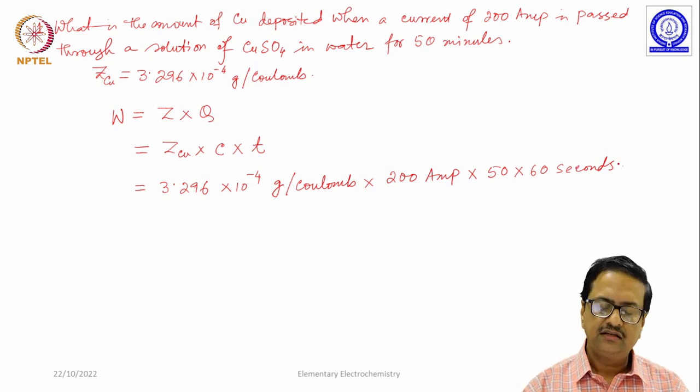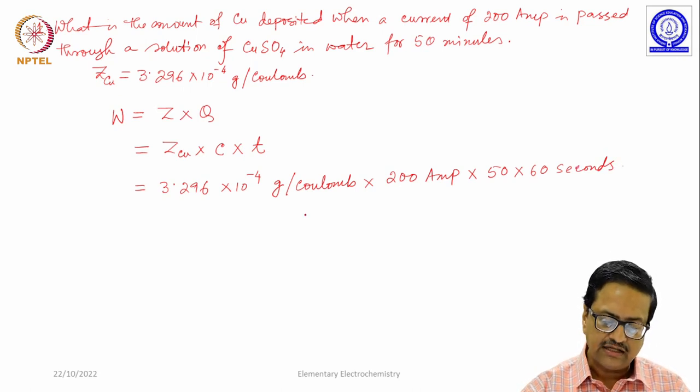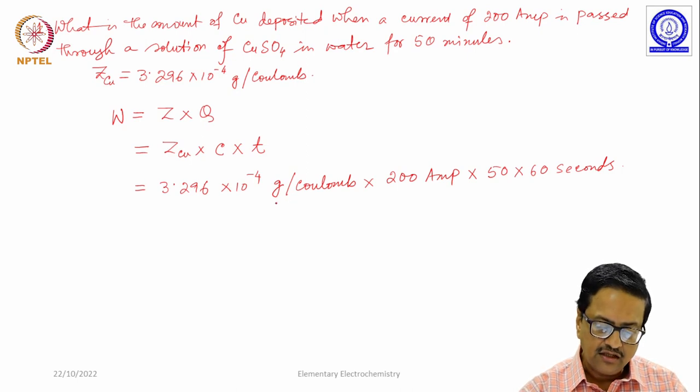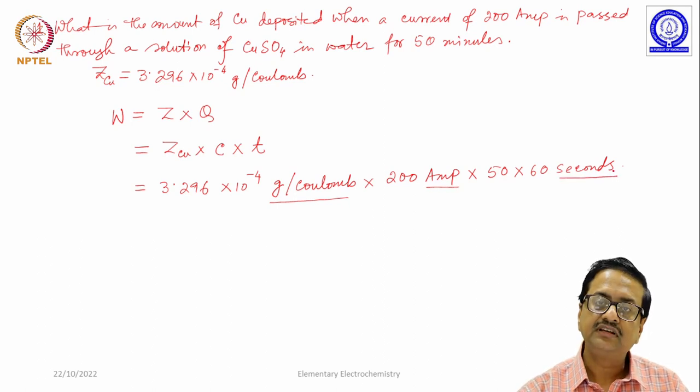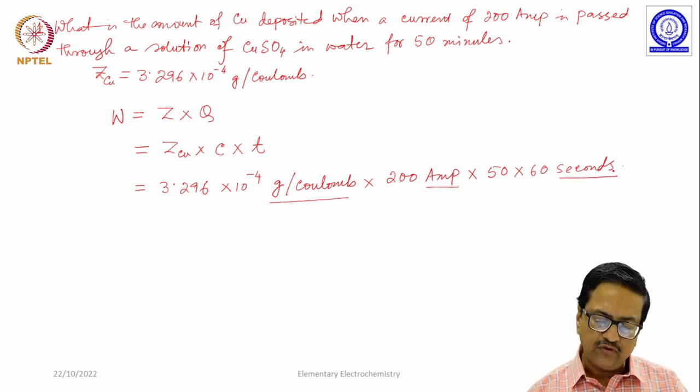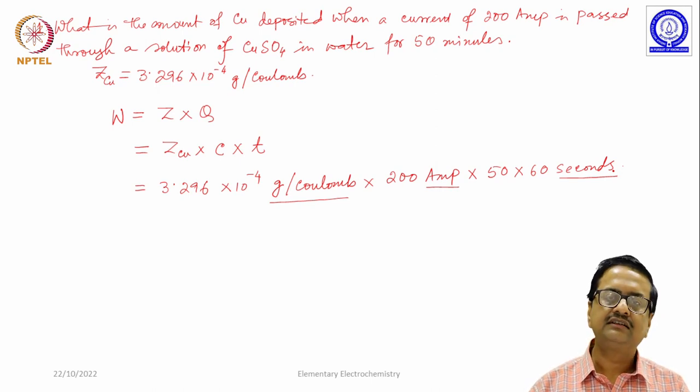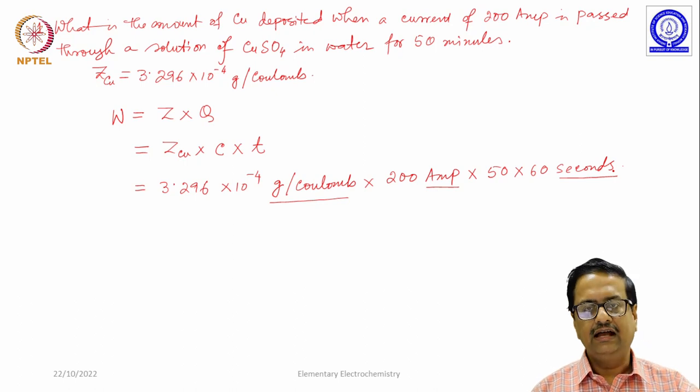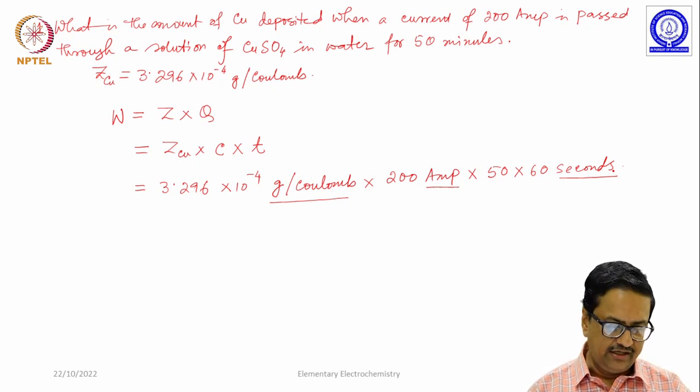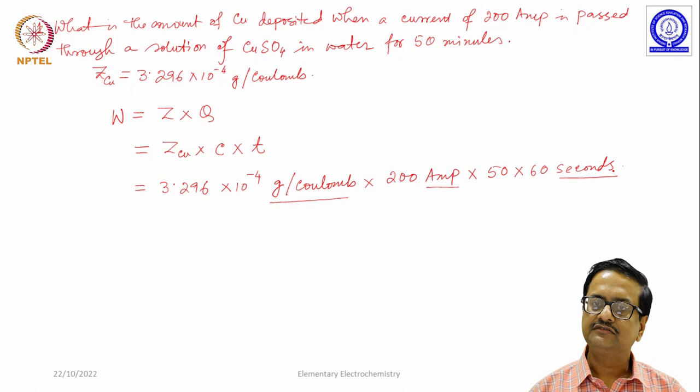What I want to highlight or emphasize here is the writing of the correct units against the corresponding physical quantities. When you are using physical chemistry and trying to calculate some physical quantity which may or may not have units at the end, but when you are calculating those physical quantities, you are using some other physical quantities.